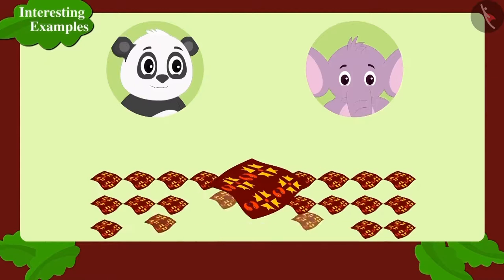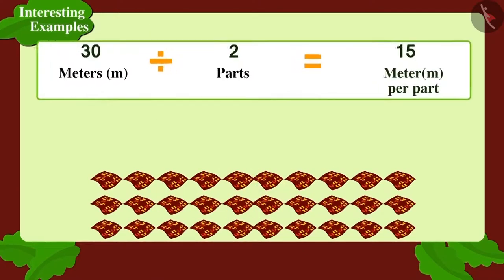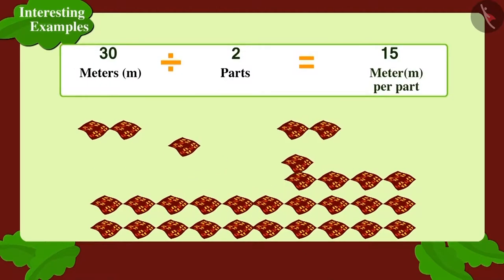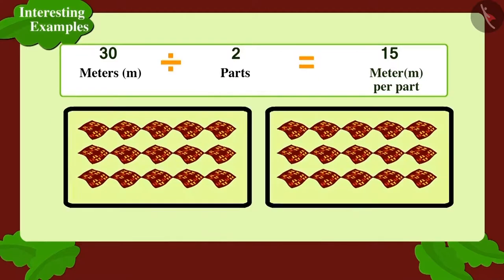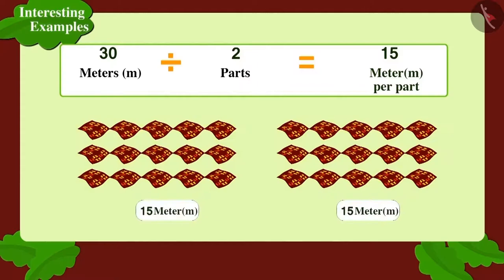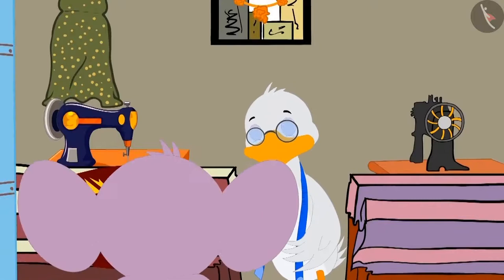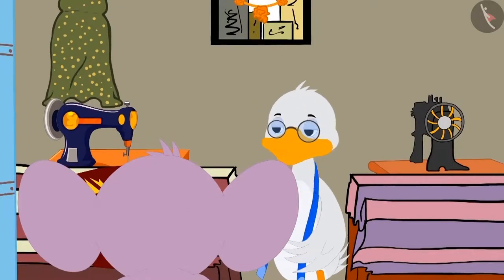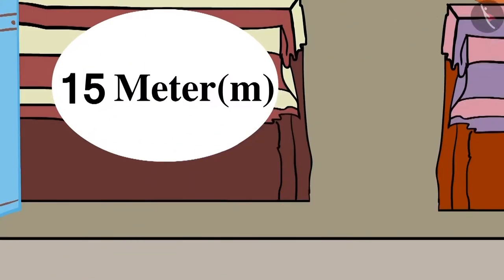Suppose there are 30 meters of fabric of 1 meter each. If we divide 30 into 2 equal parts, how many meters will be there in each part? Right! 15 meters! Appu turned towards Chacha's shop and got the fabric cut by Chacha into 2 parts of 15 meters each.